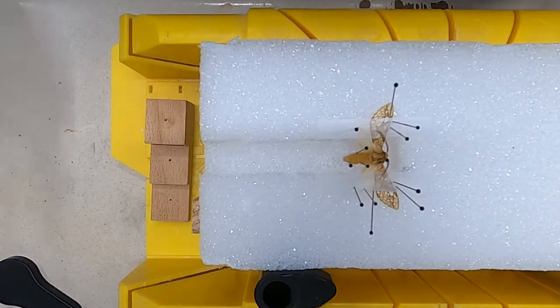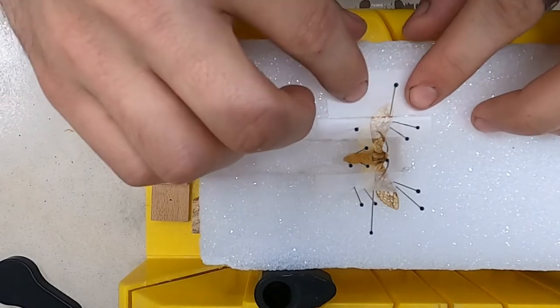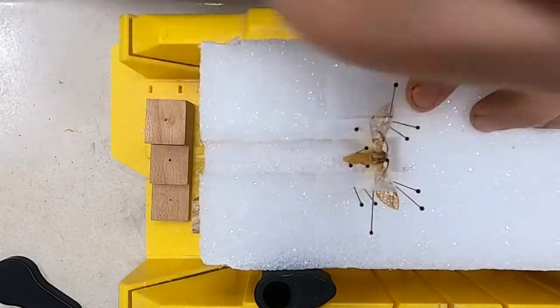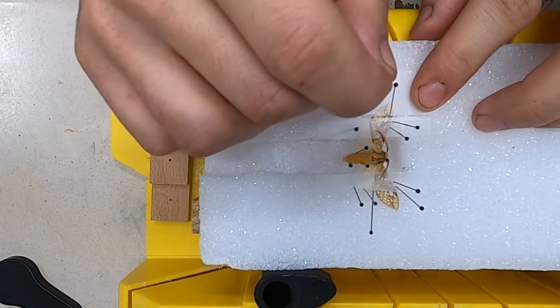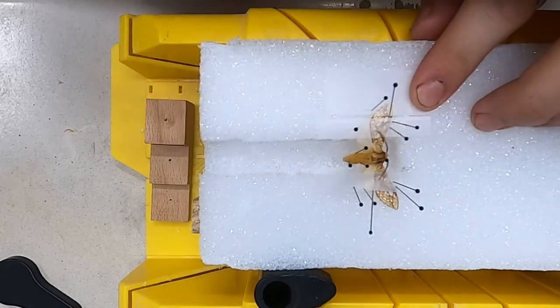I had noticed that the tip of the main wings were curving upward, so I'm adding extra wax paper to flatten out the tip of the wing so it dries flat.